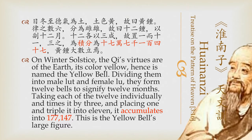Here's what it says: on winter solstice, the qi's virtues are of the earth. Its color is yellow, and hence is named the yellow bell, Huang Zhong. Dividing them into male and female lus, they form the twelve bells to signify the twelve months. Taking each of the twelve tones individually, times it by three, and then placing itself upon itself eleven times, and then divide it by three — it accumulates into 177,147. This is the yellow bell's large figure.